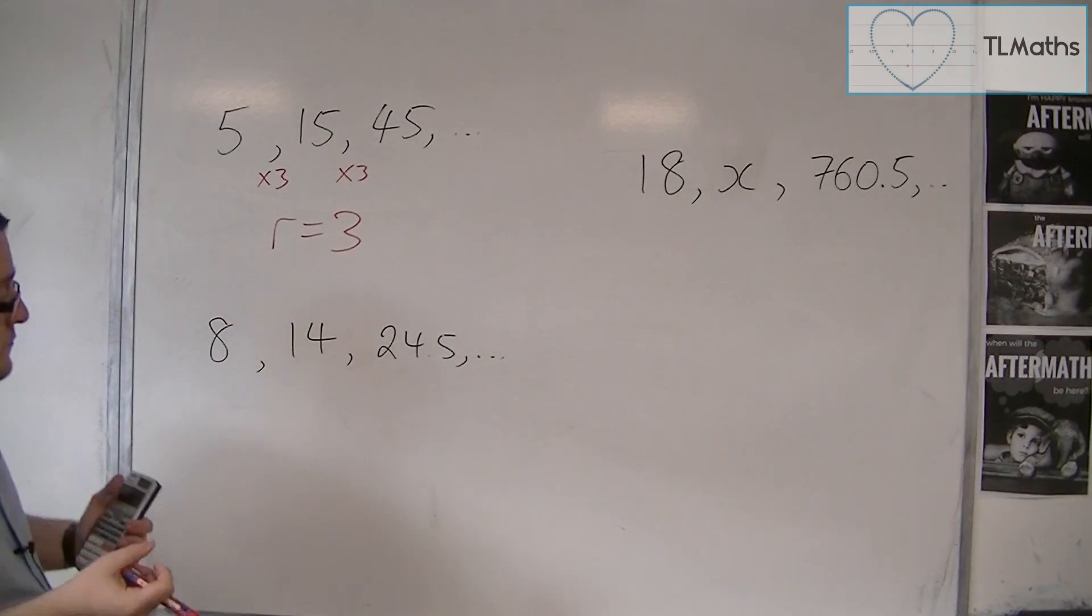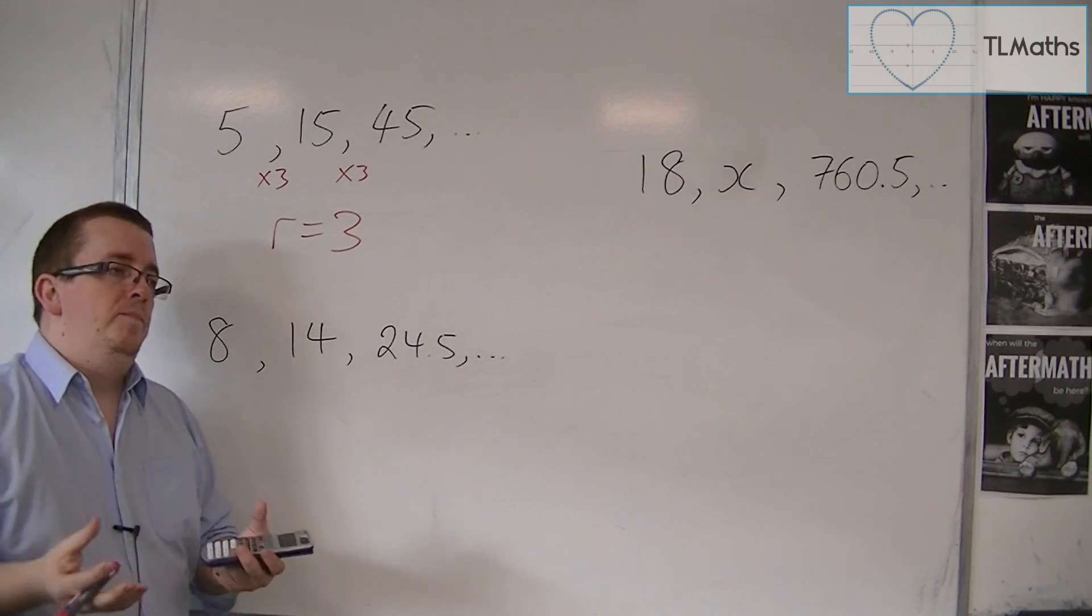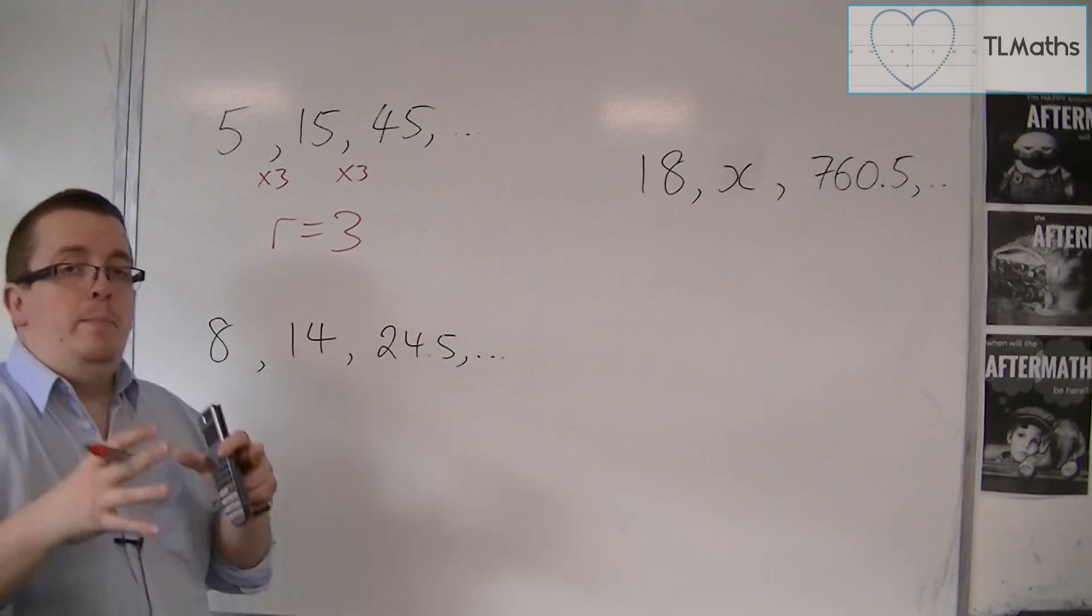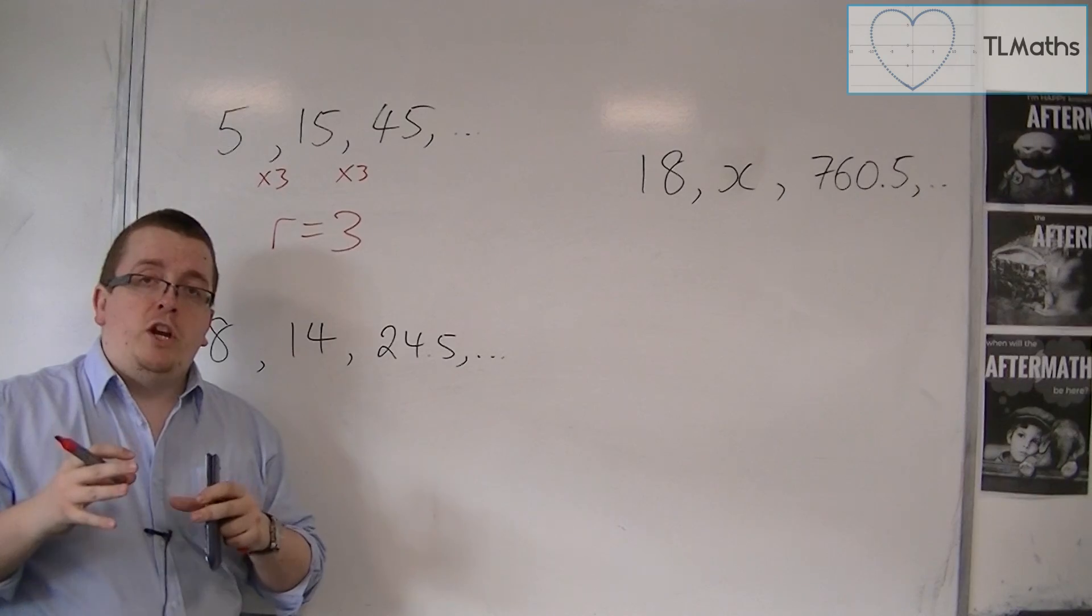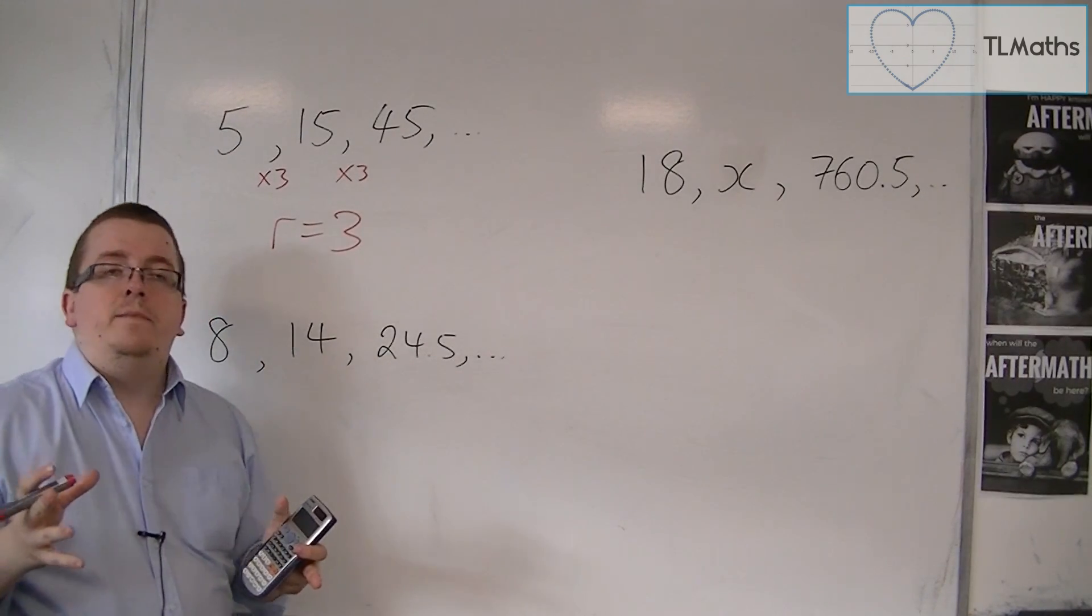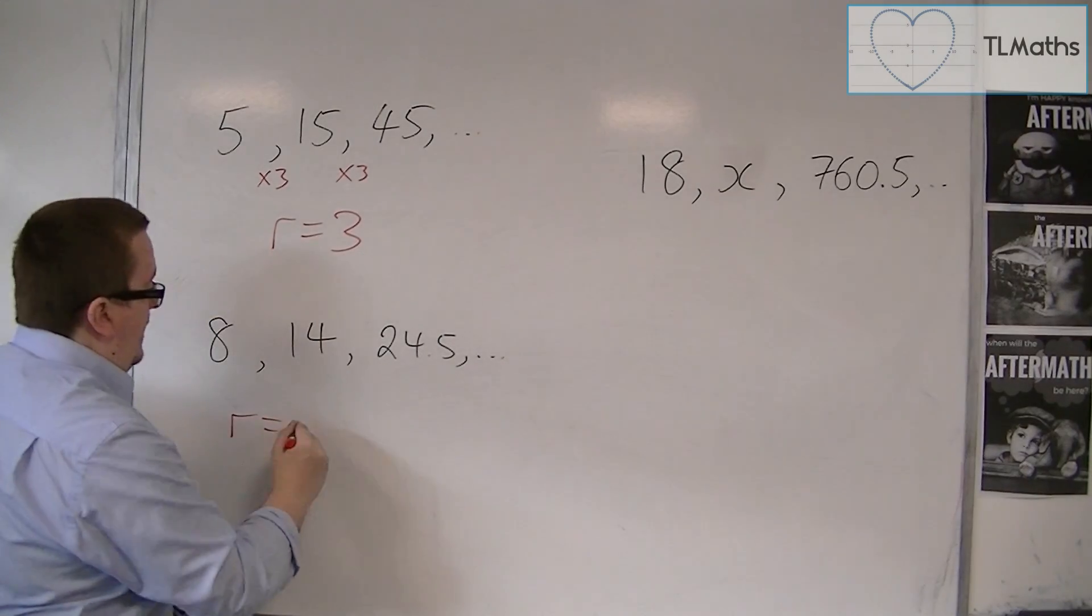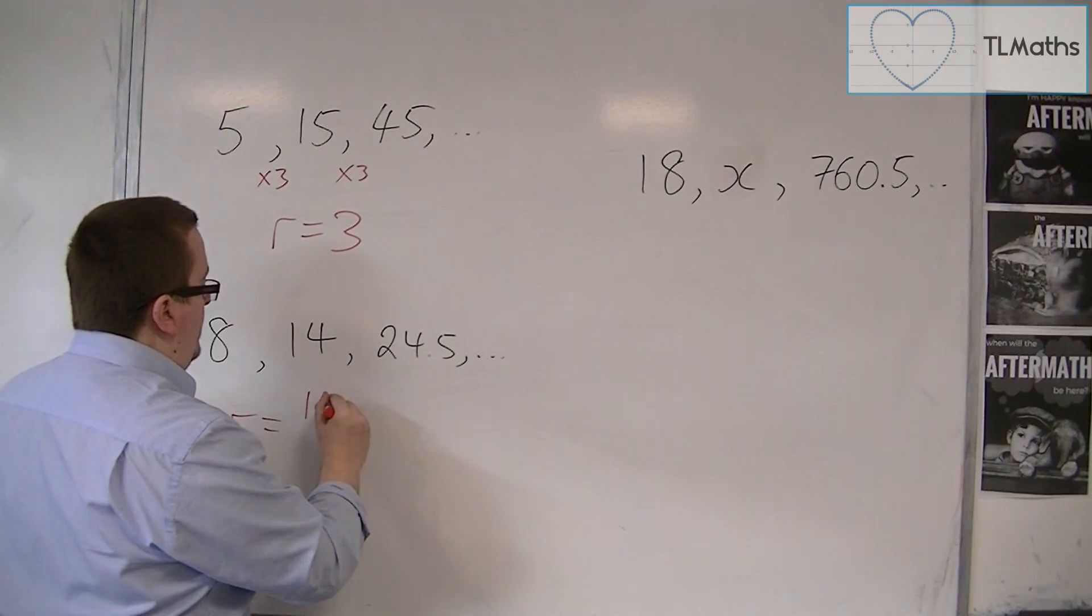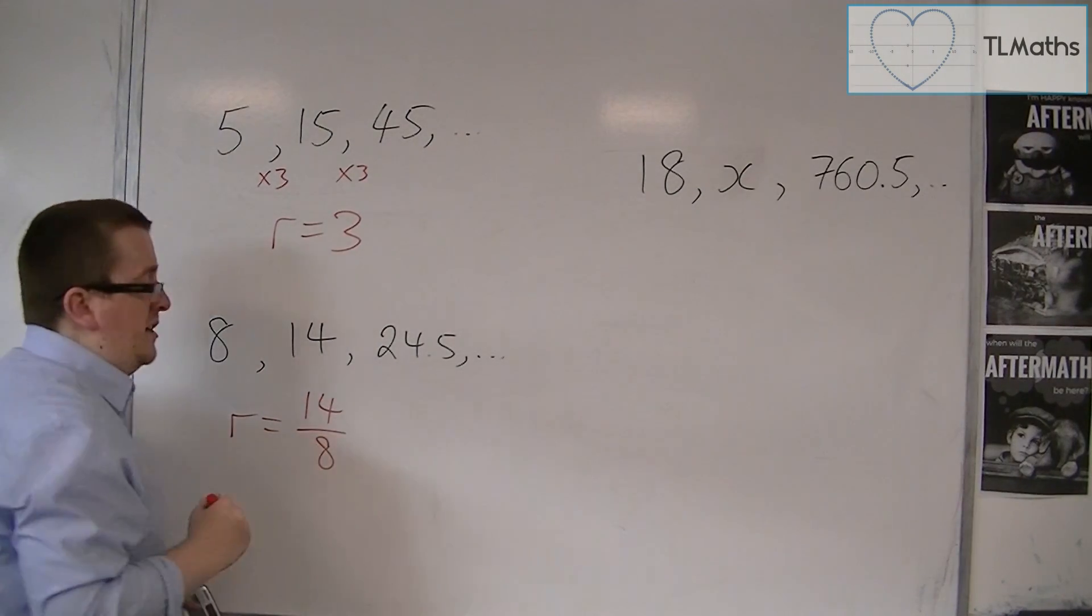Now if, however, you have a situation where, like this, where maybe the common ratio isn't explicit, you can't see it immediately, the way to find the common ratio is to take one of the terms and then divide it by the previous term.